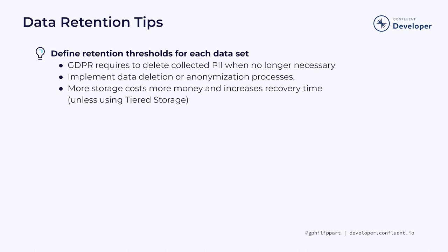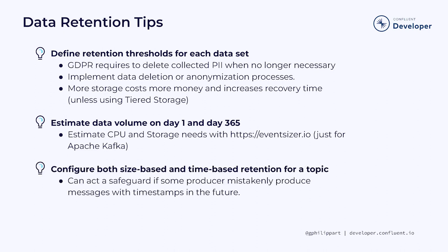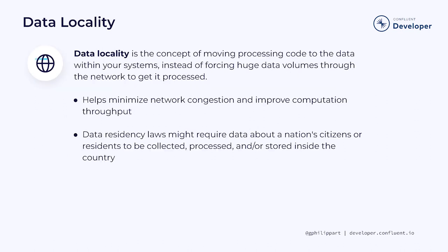Make sure to consider storage costs, as they can increase with more data. Also, clusters with more data will recover less quickly. Try to estimate the amount of data you want in your platform on your go-live day, but also in a year — this will help you plan the required CPU and storage capacity. A good way to do so is to use a tool like eventsizer.io for Apache Kafka. With Confluent Cloud, all of that is done for you via a simple knob. If you've configured your topic retention using time, it's always a good idea to also configure your maximum size as a safeguard and vice versa. We've seen cases where producers were publishing messages with timestamps in the future, hence preventing the cleaning process.